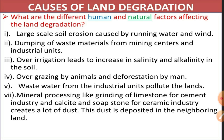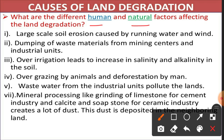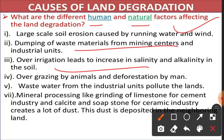Causes for land degradation: from previous times to the present, the productivity of land is degrading continuously. We classify factors into two parts: human and natural. Large-scale soil erosion is caused by running water and wind. Dumping of waste material from mining centers and industrial units causes generation of bacteria, chemical infiltration, and land degradation. Over-irrigation leads to increase in salinity and alkalinity — the Indira Gandhi Canal Project caused this problem in western Rajasthan, as well as in Punjab and Haryana.